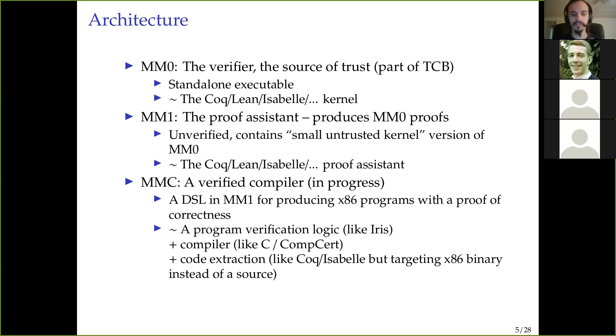MM1 is the proof assistant for MM0. It produces MM0 proofs. This is completely unverified. It does contain a sort of small untrusted kernel, which is a version of MM0, just so that it can understand what's going on. But ultimately, the source of truth is that external verifier for MM0. And so you can compare this to your favorite proof assistant.